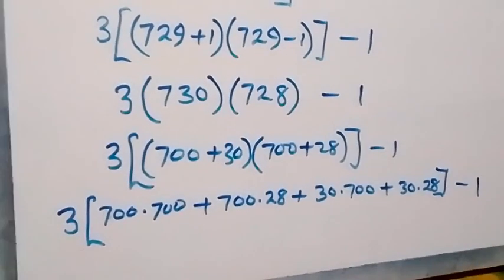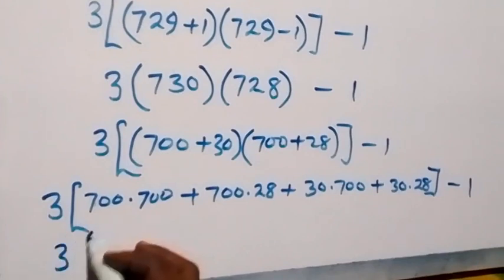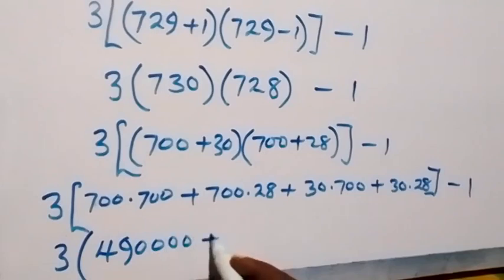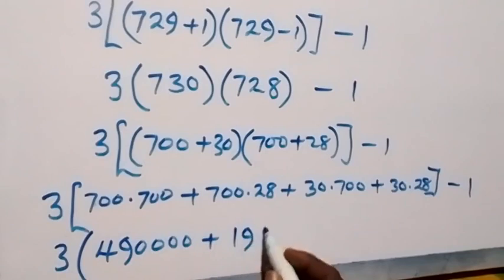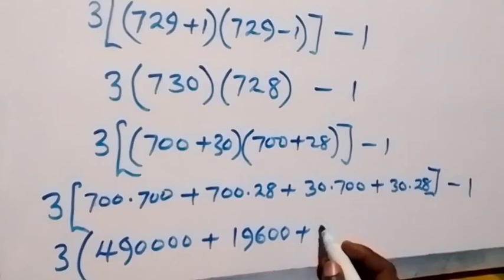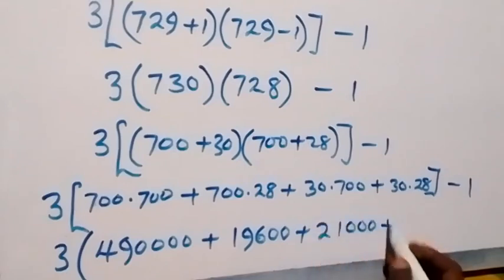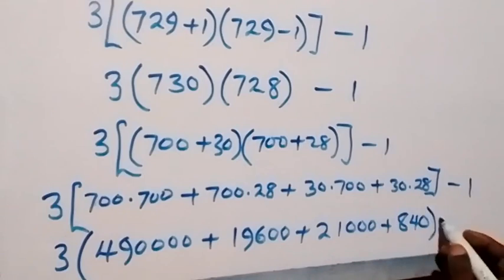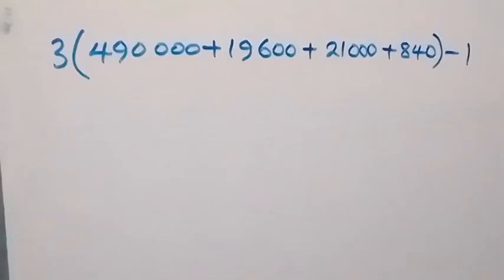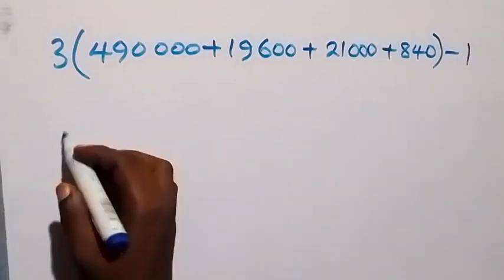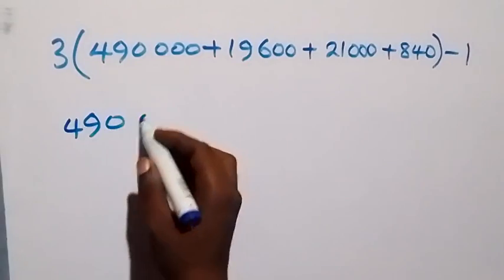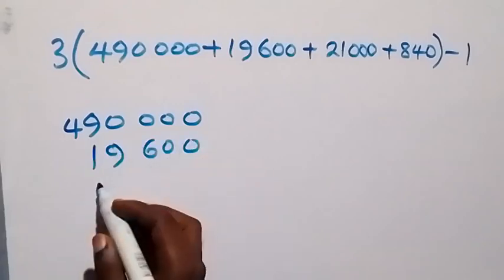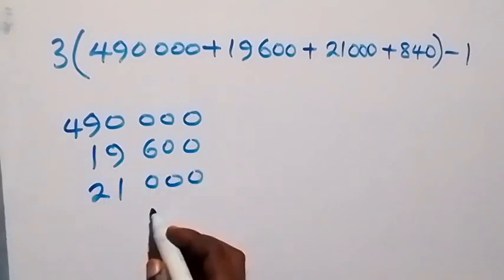From here we sum these together. We have 490,000 plus 19,000 plus 21,000 plus 840. The sum becomes: starting from the units, 0; then 4 plus 14 gives carry 1; 10 plus 1 gives carry 1 again; 12 plus 1 gives 13, carry 1; then plus 4 gives 5. So this becomes 531,440, then minus 1.